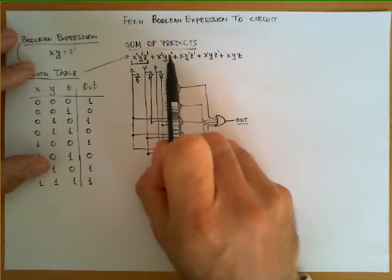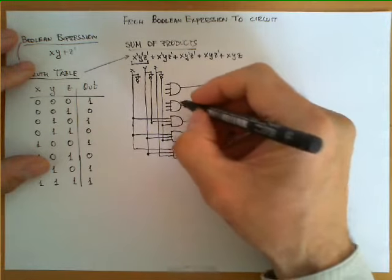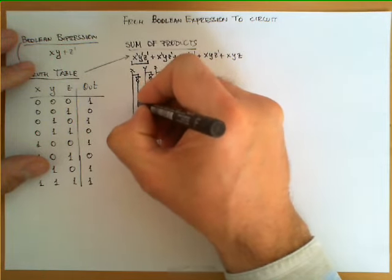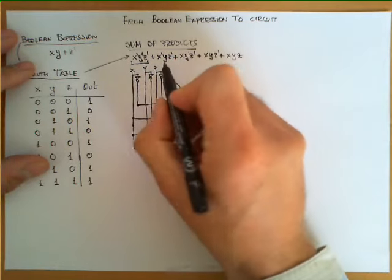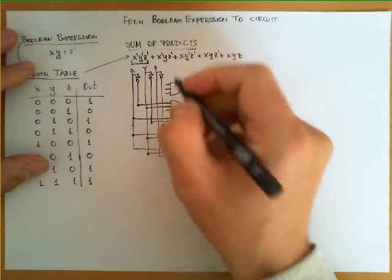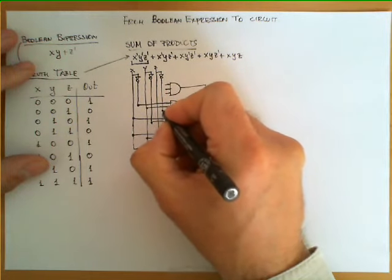This term over here is x prime so the first thing we do is we connect this to x prime which brings it down like this, second one is y, we connect it like this and the third one is z prime which we have it right here.